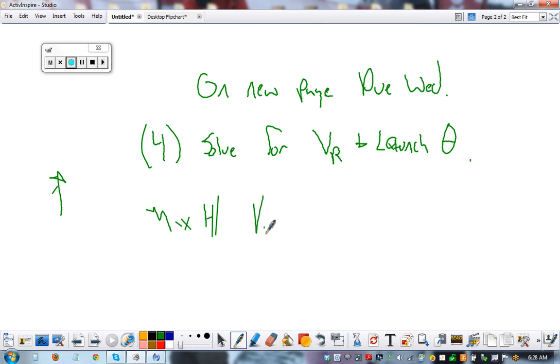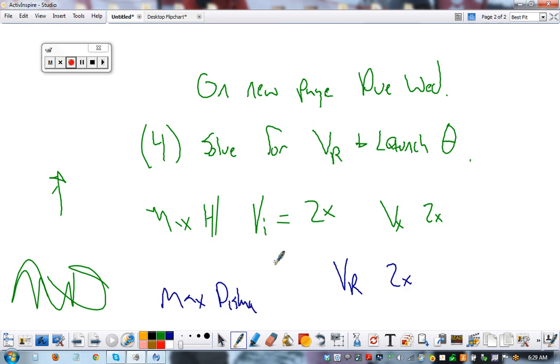We solved for velocity initial two times. And we also found velocity in the x two times. And now you're going to find your resultant velocity two times. Show all your calculations. Do the same thing for your max distance, though. We still solved for velocity initial twice. Velocity in the x twice. And now we're going to solve for the resultant velocity.